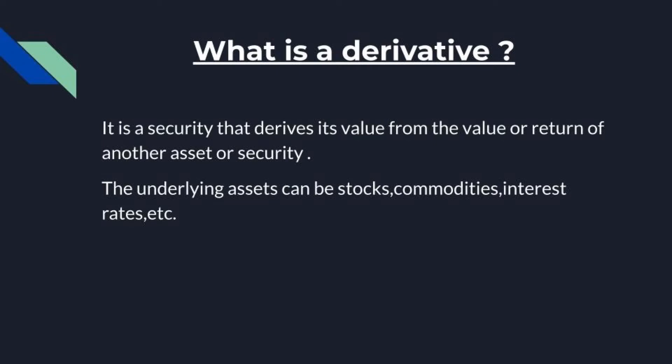When you want to understand the value of a particular stock, we usually study their profit and loss statements and their balance sheet to understand how much profit a company is making and what its future plans are. On that basis, we determine the value of a stock. But when we talk about derivatives as a security, the value of that security is basically based on the value of any other security. So if we take stocks as an underlying asset, then the value of a derivative will be based on the value of that stock — if the stock's value changes, the derivative's value also changes.